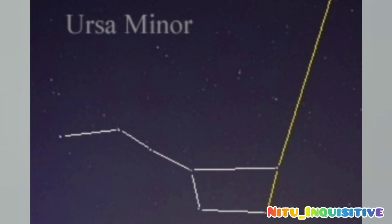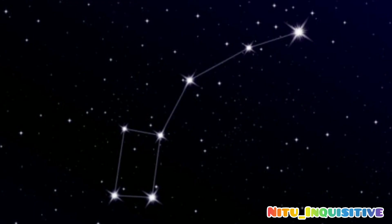In Ursa Minor constellation, it also has a group of seven stars just like Ursa Major constellation, but the stars are a little bit closer together and they are less bright in nature.